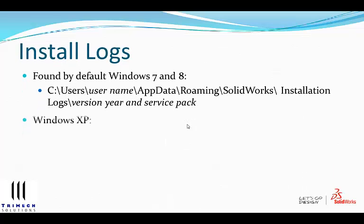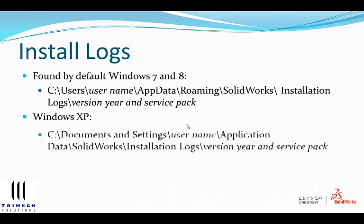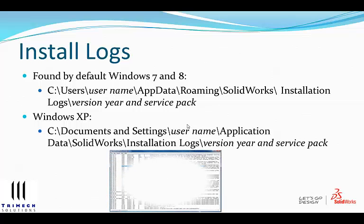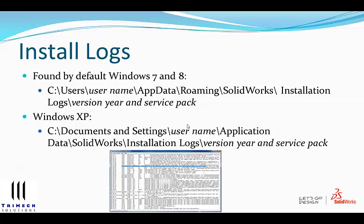By default, you can find the install logs for a Windows 7 or 8 computer by going to C:\Users\[your username]\AppData\Roaming\SOLIDWORKS\Installation Manager Logs, and then you'll see the version and service pack.